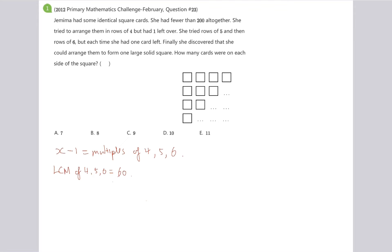And so, all the multiples of 4, 5 and 6 is going to be multiples of 60. It's going to be 60, 120, 180. These are all multiples of 60 and this is our list of 200.